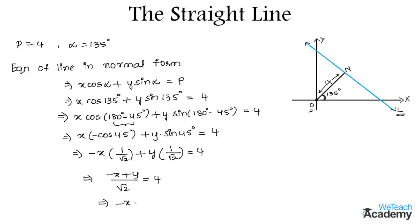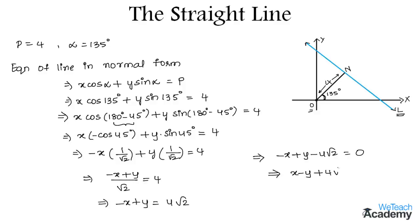So that implies (-x + y)/√2 = 4. Transferring √2 to the other side we get -x + y = 4√2, which gives -x + y - 4√2 = 0. Taking minus as the common factor we get x - y + 4√2 = 0. So this is the equation of a line at a distance of 4 units from the origin making an angle of 135 degrees with the positive x-axis.